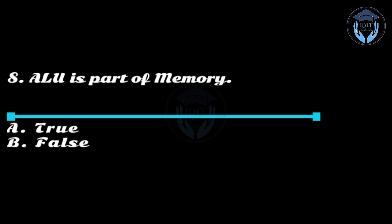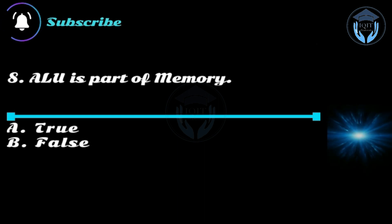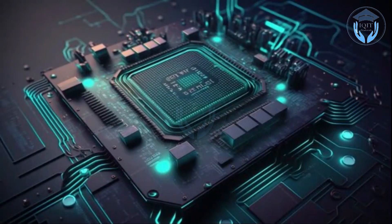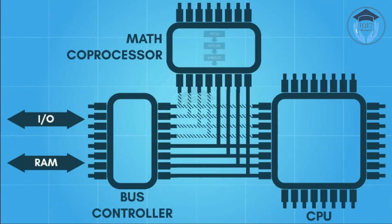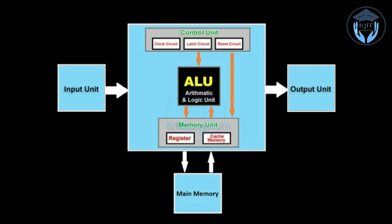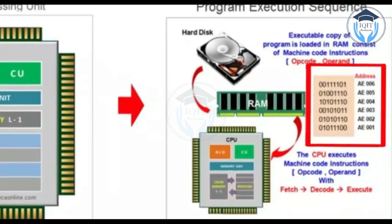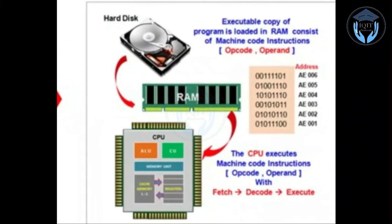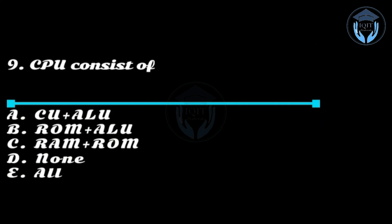Question eight: ALU is part of memory — option A: True, option B: False. Answer: option B, False. The arithmetic logic unit is not part of memory but rather a component of the CPU. The ALU is responsible for arithmetic and logical operations on data held in the CPU's registers or main memory. Memory, on the other hand, refers to the storage devices used to store data and instructions that the computer uses to carry out its operations.